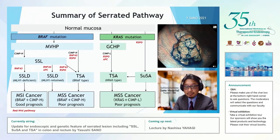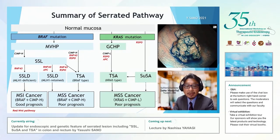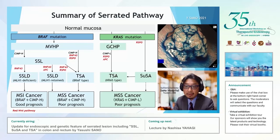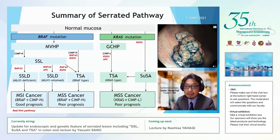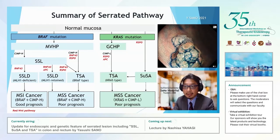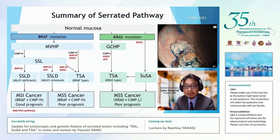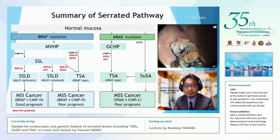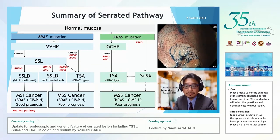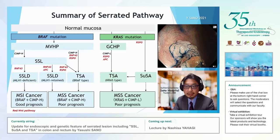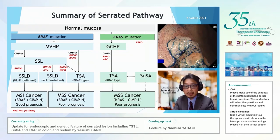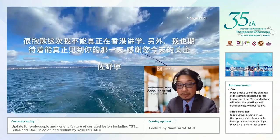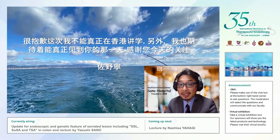In summary, ladies and gentlemen, the serrated pathway can be classified into BRAF type and KRAS type. Some hyperplastic polyps are thought to lead to microsatellite instability-high colorectal cancer, microsatellite stable colorectal cancer, and also traditional serrated adenoma. Therefore, it is necessary to accurately diagnose and treat the serrated region in order to prevent colorectal cancer. Thank you very much for your attention today. I hope to see you all again soon.